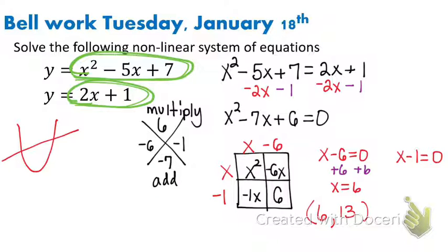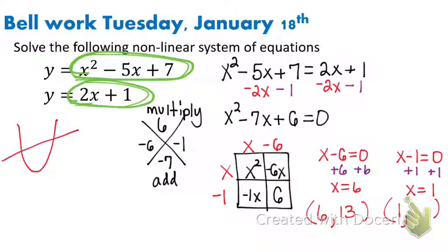For our second equation, we're going to add the one, so we get x equals one. Take that one and substitute it in: two times one plus one. Two times one is two, and two plus one is three. So those are your two solutions.